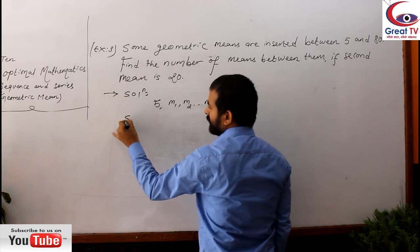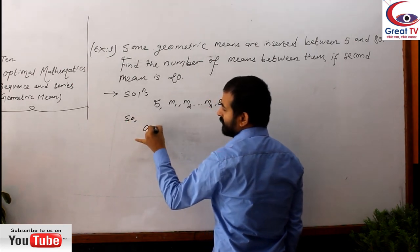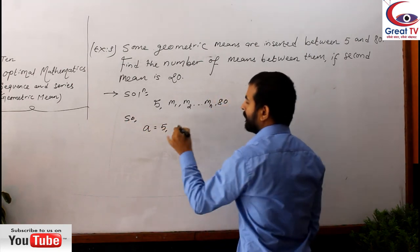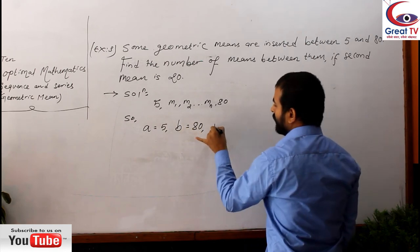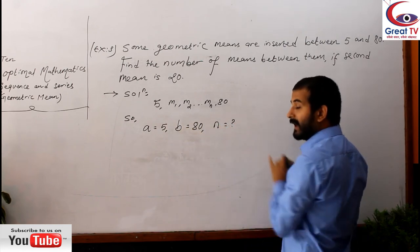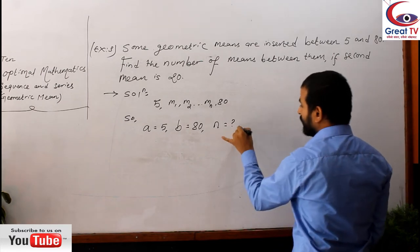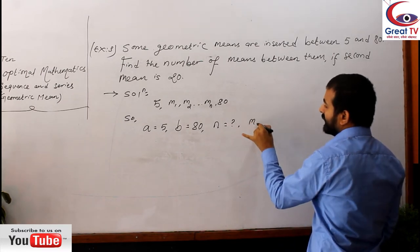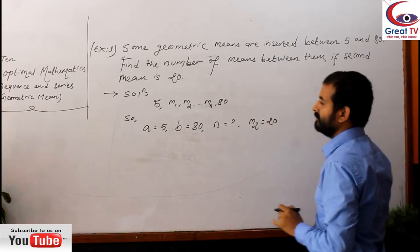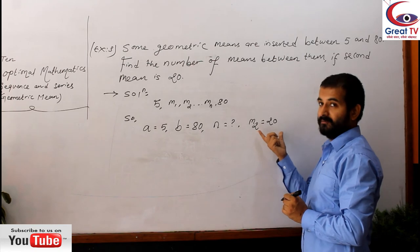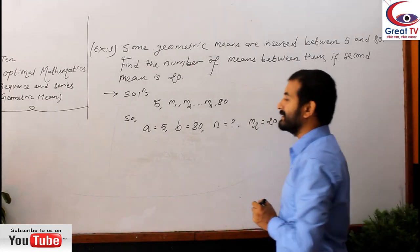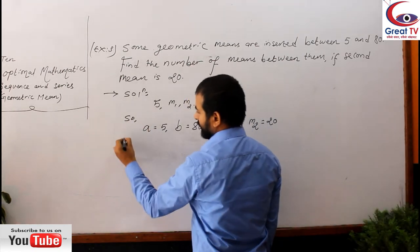According to question, now we can write the first term is 5, the last term is 80, and the number of means is - we don't have that, we have to find it. And we have given second mean is 20. So what will happen if we use this clue first of all? Let's use the clue.